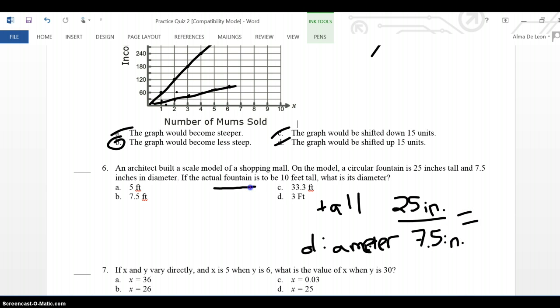Well, I know that the actual fountain is 10 feet tall. But, both of these measurements 25 and 7.5 are in inches. So, instead of using 10 feet, I need to turn those 10 feet into inches. I know that there are 12 inches in 1 foot. So, in 10 feet, I would have 10 times 12, which is 120 inches. And that's how tall the actual fountain is. I'm trying to find the diameter of the actual fountain. So, I'm going to put an X for diameter at the bottom because I don't know what that is. That's what I'm trying to find. So, now I cross multiply.